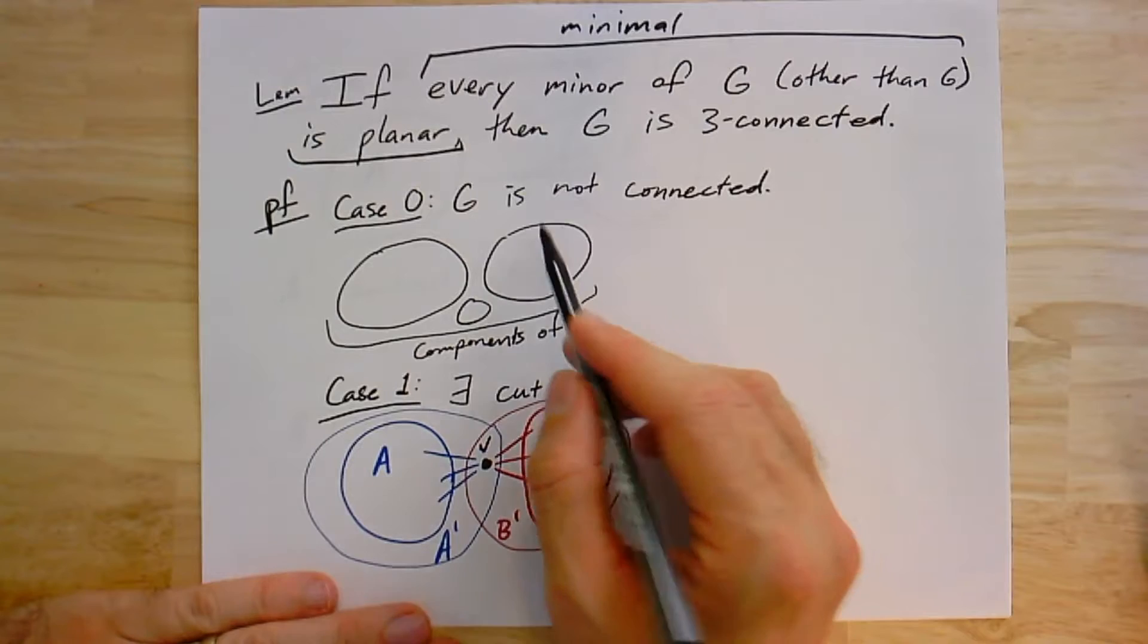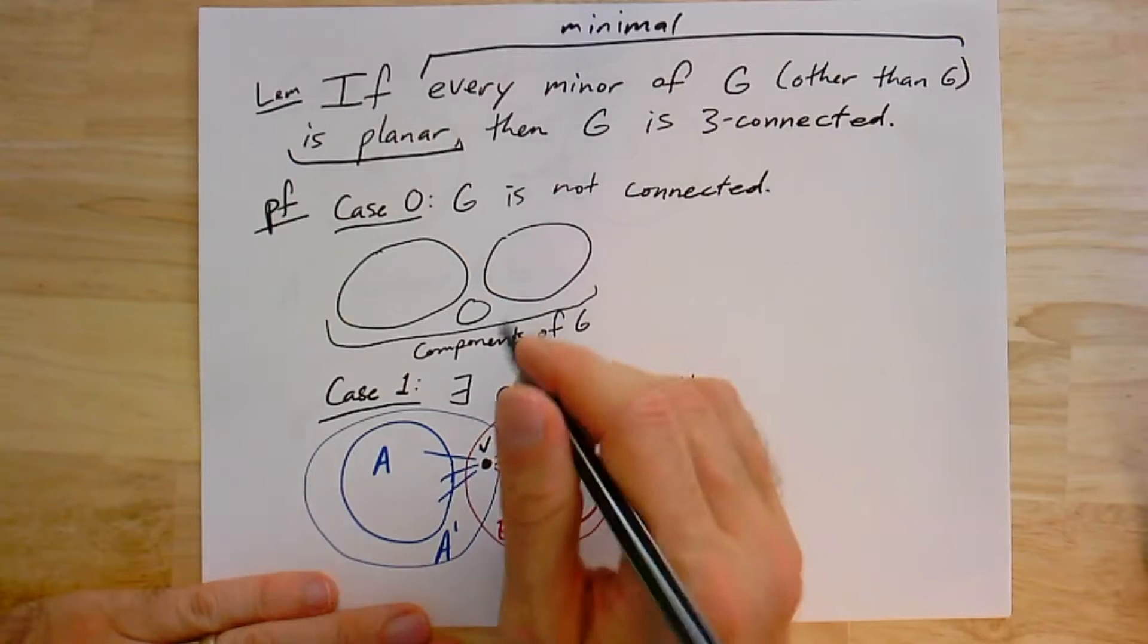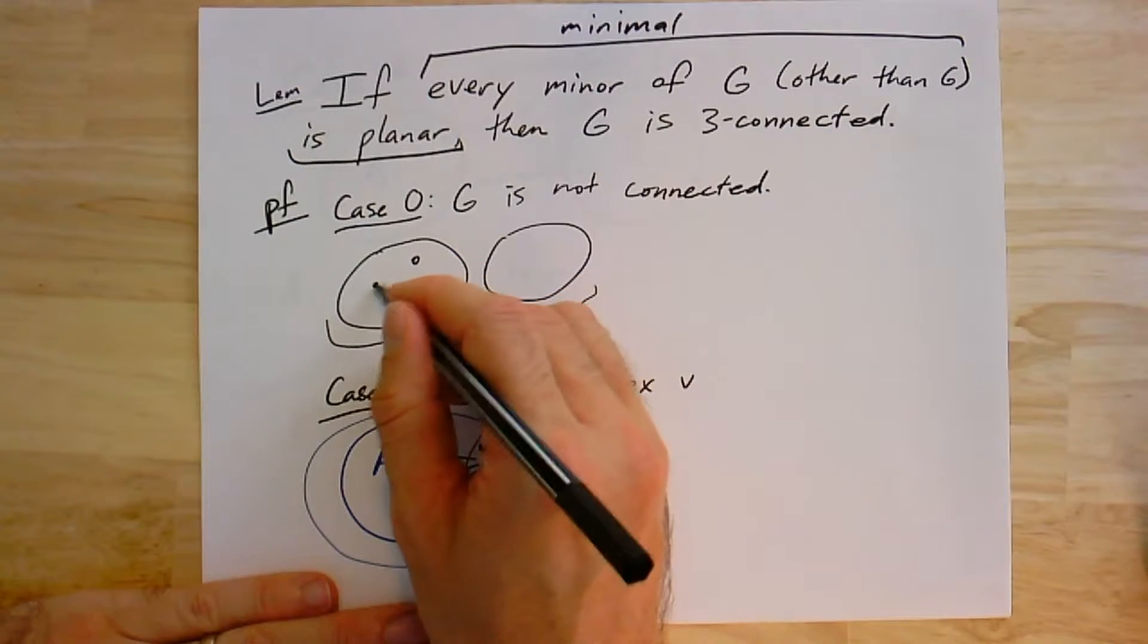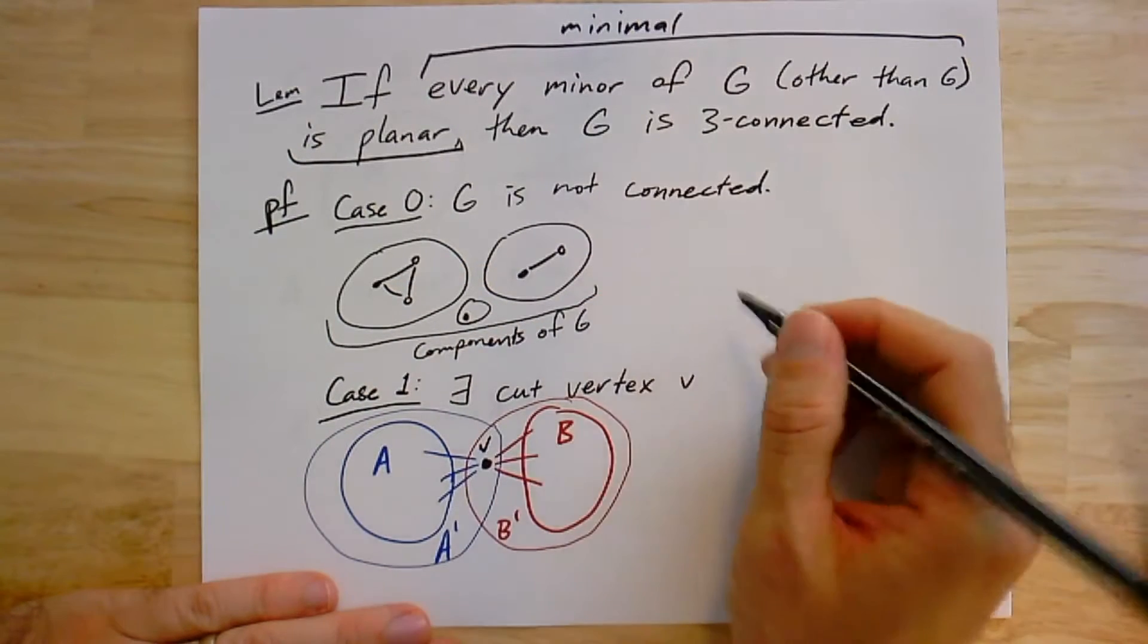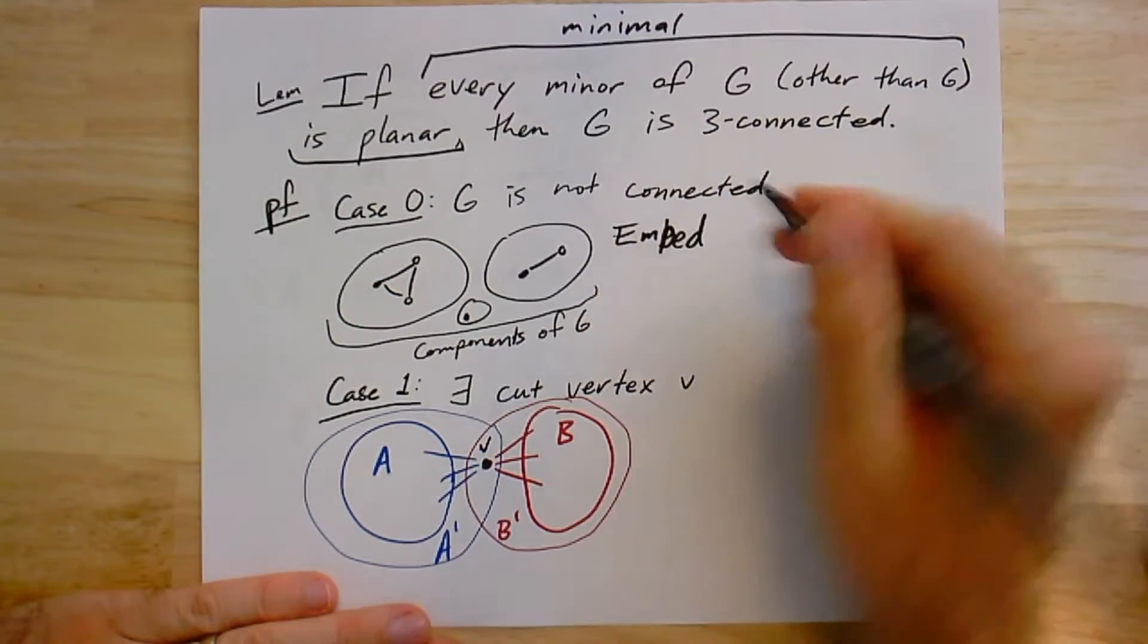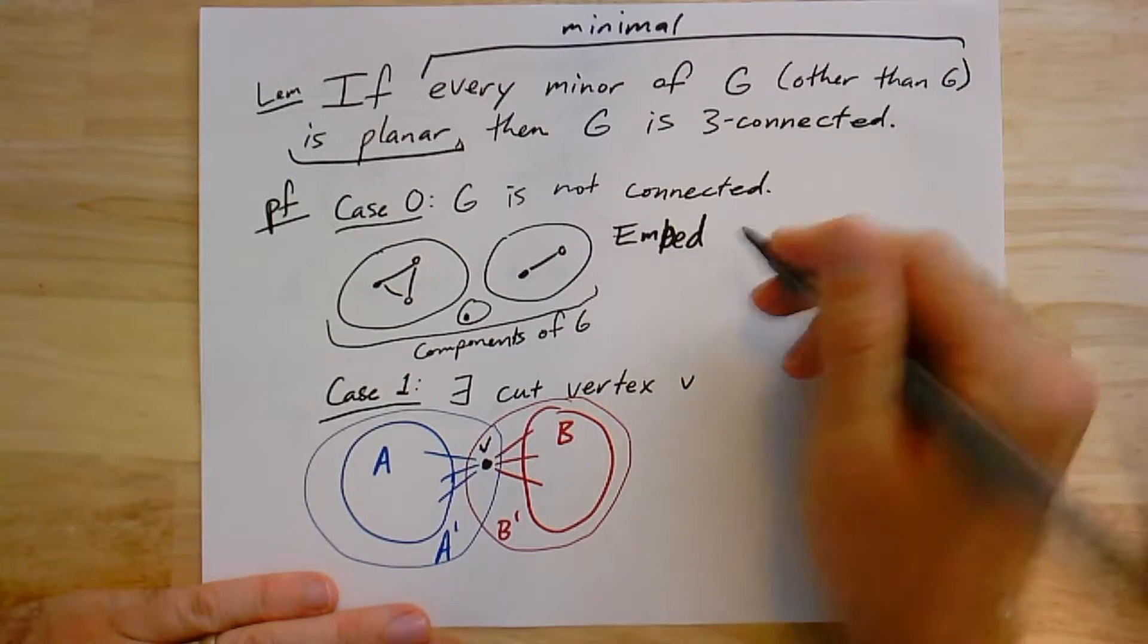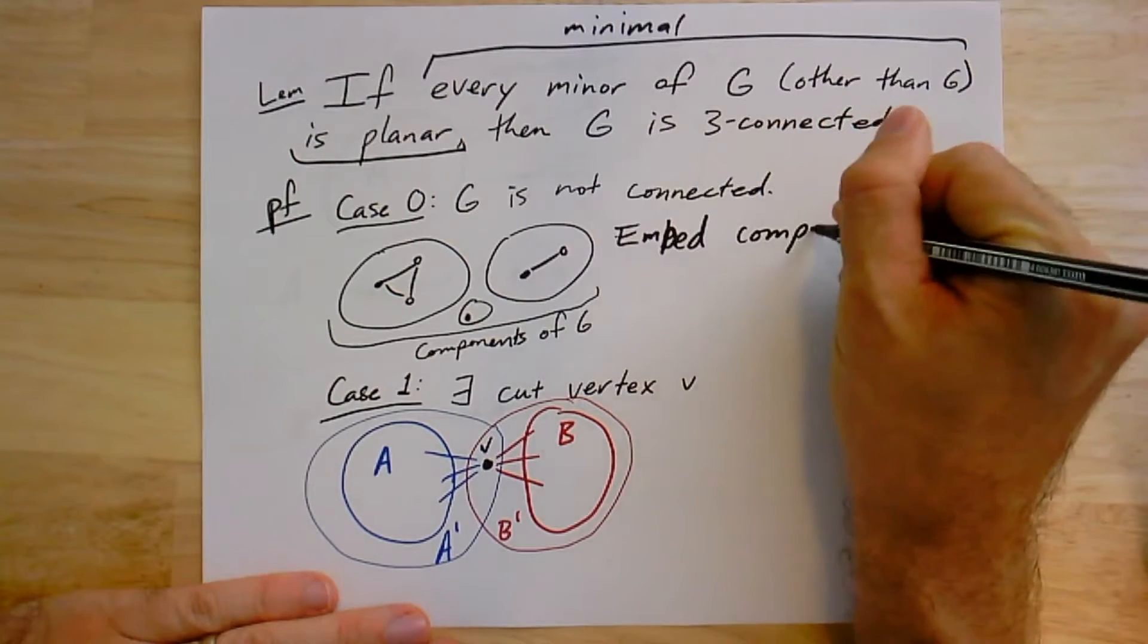The first case: if G is not connected, I call this case zero. Then what I can do is just look at the different components and embed them all separately. Each one of these components is a subgraph, in fact a proper subgraph, and therefore it's a minor different from G, and therefore they're planar. Since each one is planar, I can embed them separately.